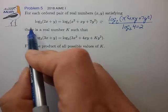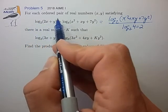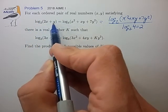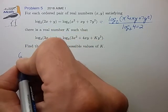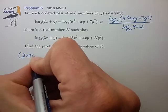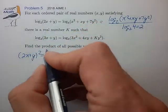We can bring this 2 over to the left side of the equation and bring it inside the log to create a square of 2x plus y, from which we then find that equating the argument of the logarithms to be the same.